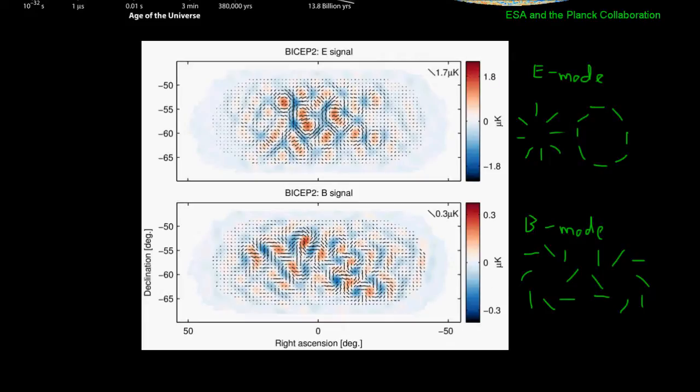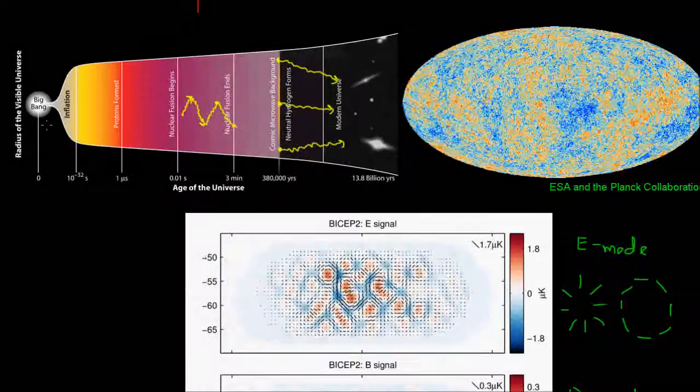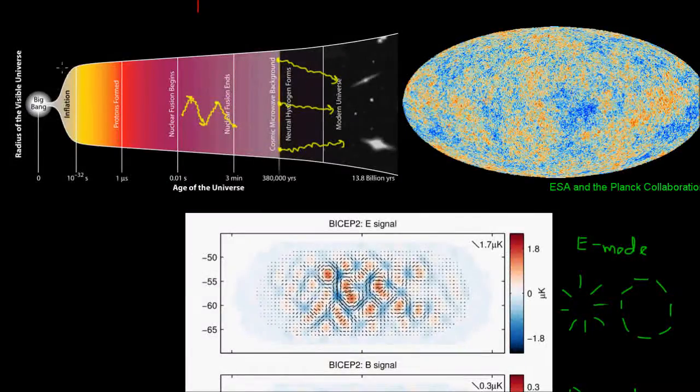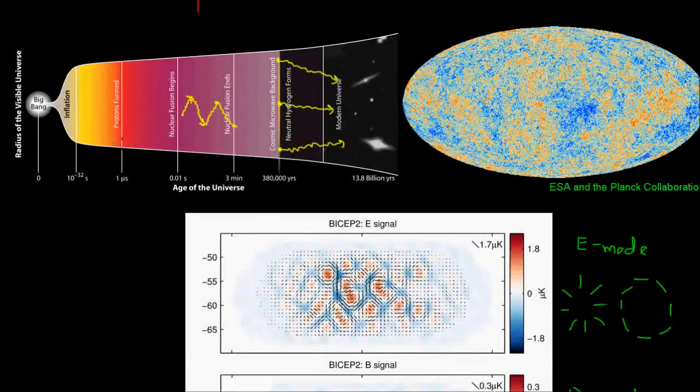However, if in the very early universe there was a period of exponential expansion, a period known as inflation, then we could get a strong source of gravitational waves. And we'll talk a little bit more about what inflation is and what evidence the BICEP2 team has found to support inflation.